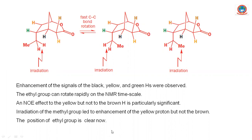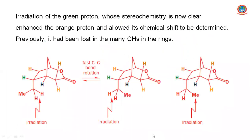The position of the ethyl group is now clear — it is endo. Next, if you irradiate the green proton, the orange proton increases in intensity. Therefore, we can say these two protons are exo and the ethyl group is endo. The brown proton shows no change in intensity because it is far from the green proton and the ethyl group. Therefore, the structure of the compound is confirmed. This is the application of the NOE experiment.